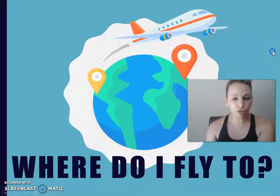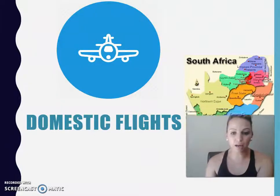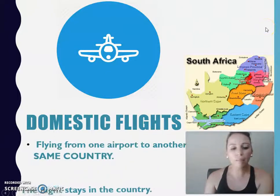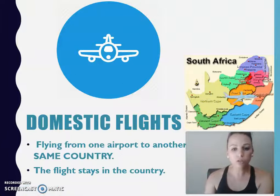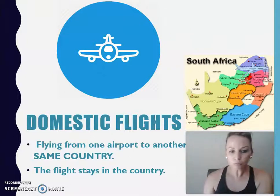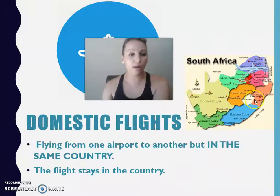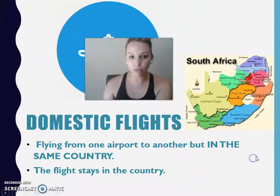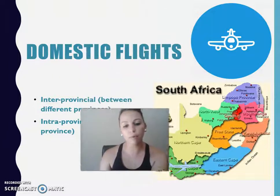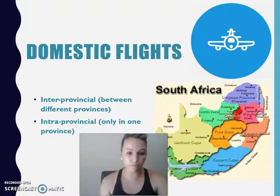Now, where do I fly to? The first type is a domestic flight. As you can see on the map on the slide, a domestic flight is when an airplane departs from one province to another province, or from one airport to another airport, but stays within the international borders of South Africa — flying between airports but remaining in the same country.